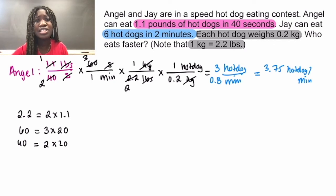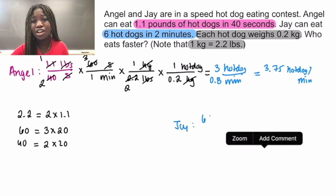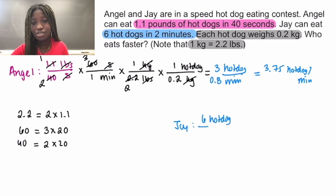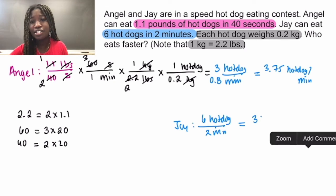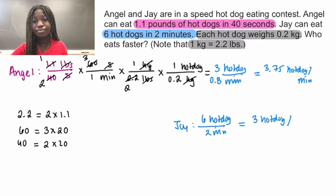Now let's figure out the exact rate Jay can eat. We know that Jay can eat 6 hot dogs in 2 minutes, so if you simplify that, that is 3 hot dogs per minute. Which means who is faster? It is Angel.